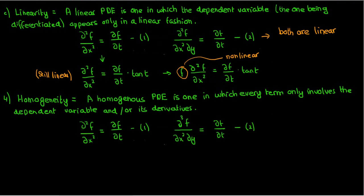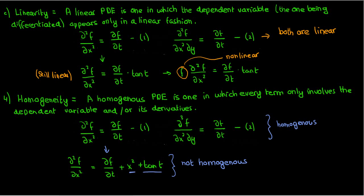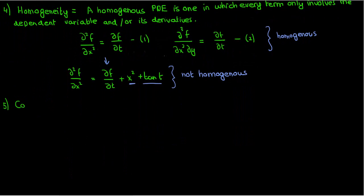Back to the two example PDEs we just had. Both of them are homogeneous, since every individual term contains f or its derivatives. However, if I took this first example PDE and added x² plus tan(t), it would become non-homogeneous because now there are two terms which don't contain f, the x² and the tangent of t.